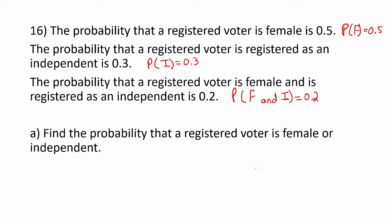Part A. Find the probability that a registered voter is female or independent. This is telling me to use the addition rule. The probability that a voter is female or independent equals the probability a voter is female added to the probability a voter is independent, and then we have to subtract the intersection that a voter is female and independent.